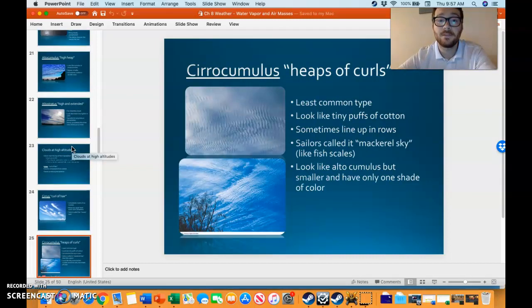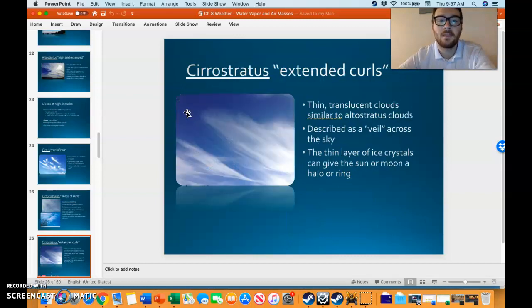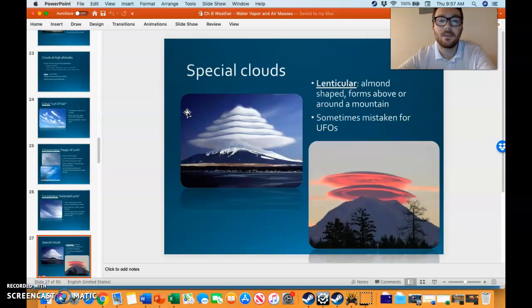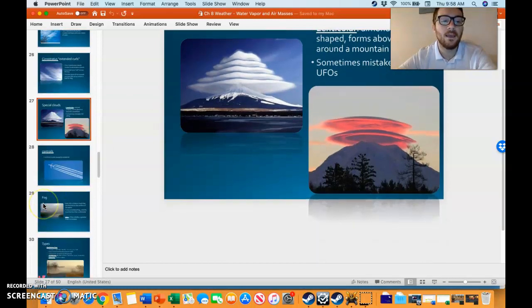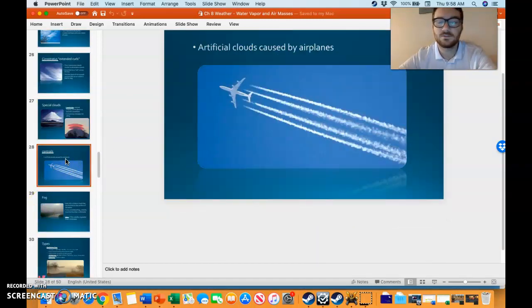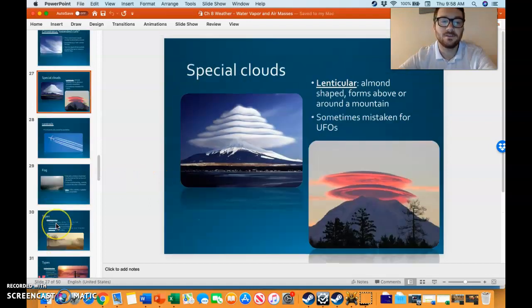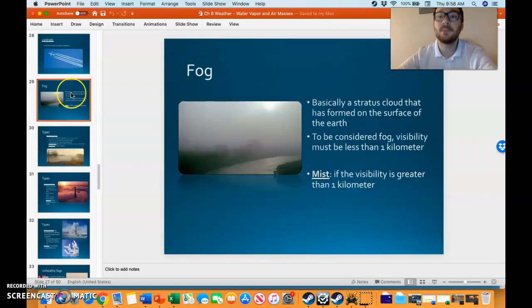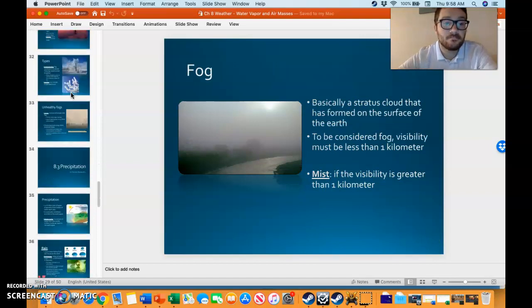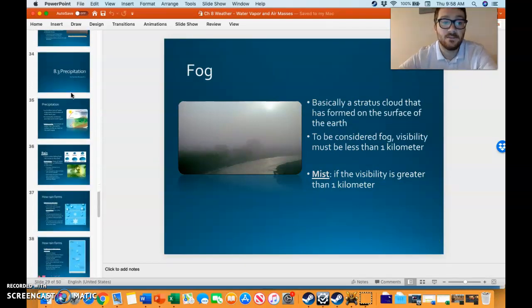You have cirrus, the curl of hair; cirrocumulus, which is like mackerel sky, looking like fish scales way up in the sky; and cirrostratus, extended curls way up in the sky. Lenticular forms around mountains and looks kind of like a UFO. Contrails are formed by airplanes, especially when there's lots of water vapor. Not to mention that fog is a ground cloud, and there are lots of different kinds of fog.